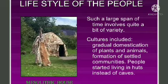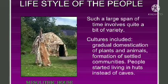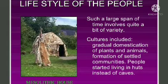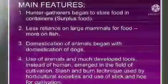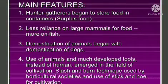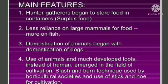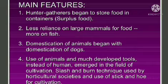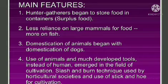Cultures included gradual domestication of plants and animals, formation of settled communities, and people started living in huts instead of caves. To recall the main features: hunter-gatherers began to store food in containers — this is called surplus food. There was less reliance on large mammals for food, and more on fish. Domestication of animals began with the domestication of dogs.